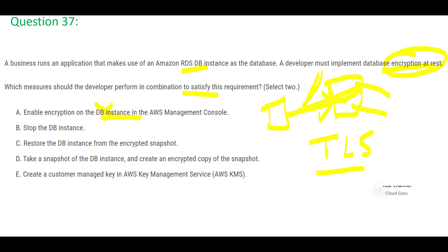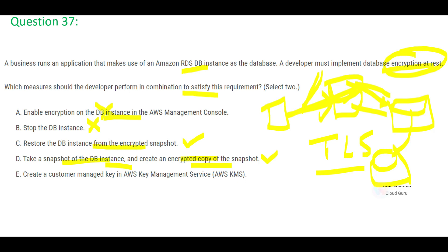Option B says stop the database instance — but stop and do what? That alone is incomplete and wrong. Option C says restore the database instance from an encrypted snapshot — this looks correct, but before that, option D must come first: take a snapshot of the database instance and create an encrypted copy of that snapshot. So the order is D then C — take snapshot, encrypt it, then restore from the encrypted snapshot.